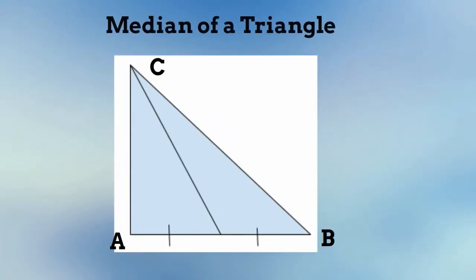The Median of a Triangle: if D is a midpoint of A and B, then CD is the median of triangle ABC. A triangle has three medians.